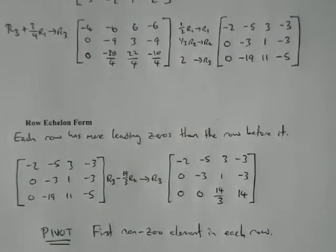So the only row that I'm replacing is row 3, so row 1 and row 2 stay exactly the same, but row 3 has to change. So 0 minus 19 thirds of 0 is 0. Negative 19 minus 19 thirds, which is negative 19, so negative 19 minus 19 is 0.